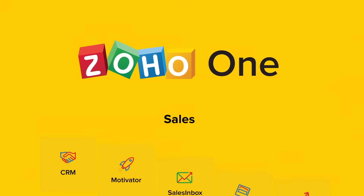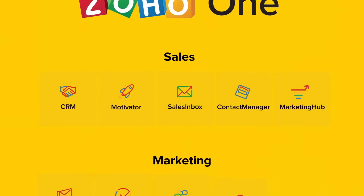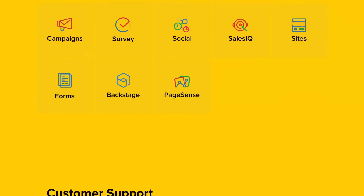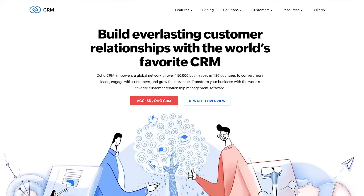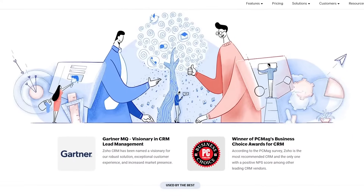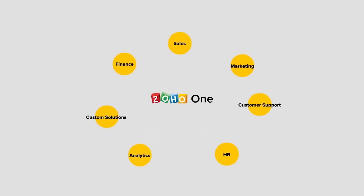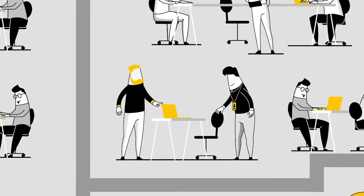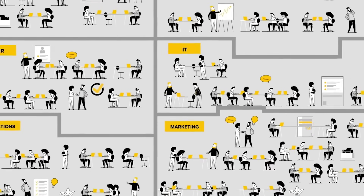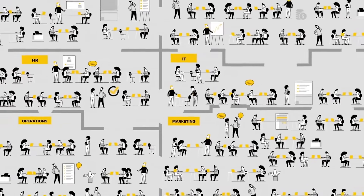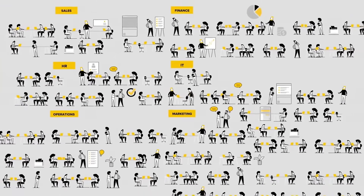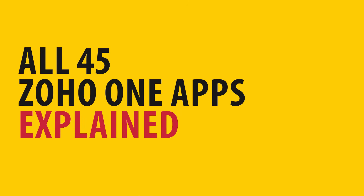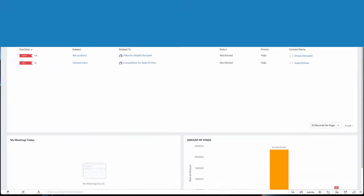Zoho One is a suite of applications that work collectively and will help you run your entire business on the cloud. The most popular app in the bundle is Zoho CRM, which you might already know, but the suite actually includes 45 applications. The apps are divided in several categories and some of them perform similar actions, which could be overwhelming to understand what each one is used for. In this video, I'm going to give you a quick overview of all of them as fast as possible.